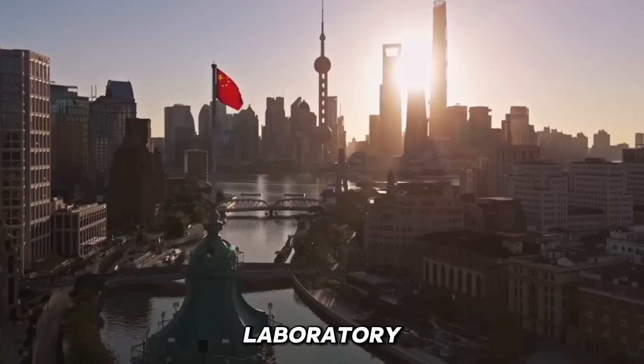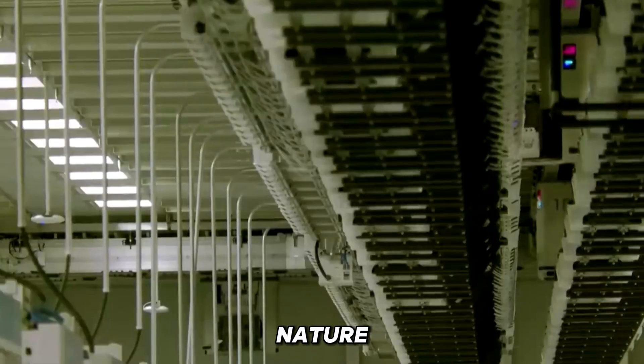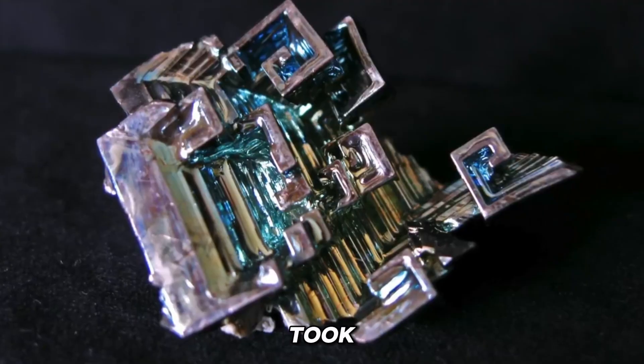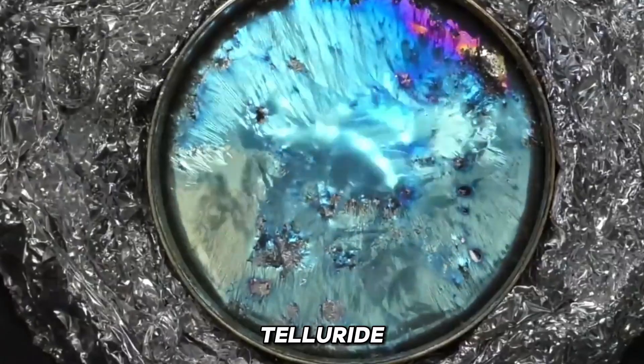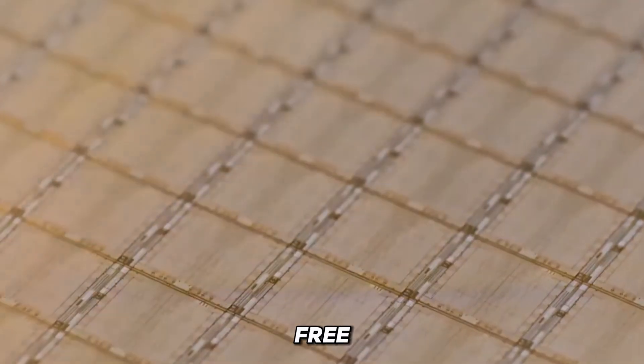The breakthrough happened inside a laboratory at Peking University, recorded in a study published in the journal Nature. There, the researchers took bismuth already doped with telluride and assembled, layer by layer, the first functional silicon-free chip ever built.